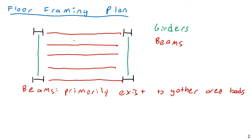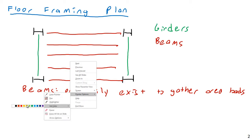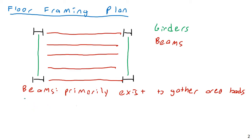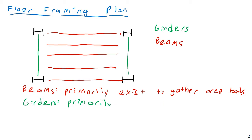As I have this drawn, this would be a one-way loading arrangement where I don't have beams going in two directions, just beams in one direction. Girders are going to generally, or primarily, exist to support beams. They primarily exist to support beams.